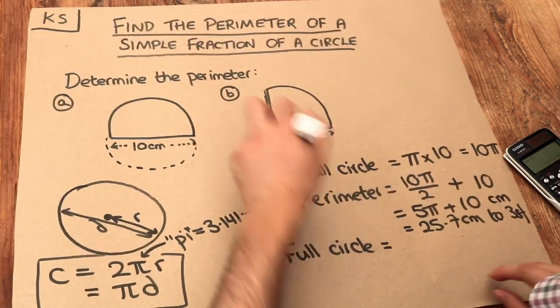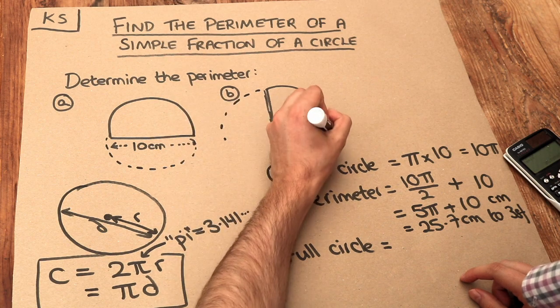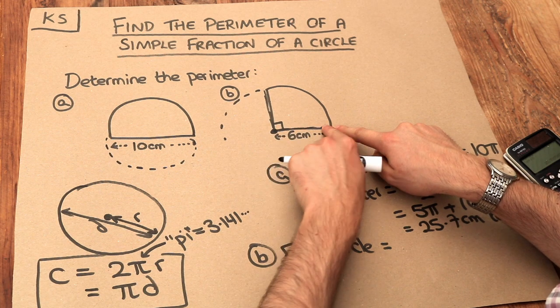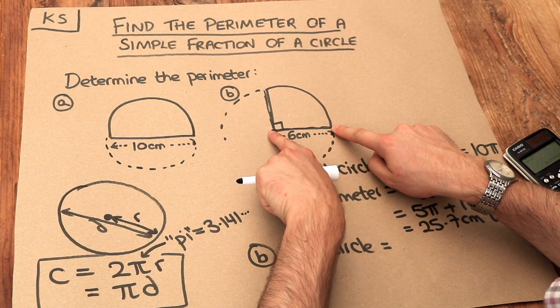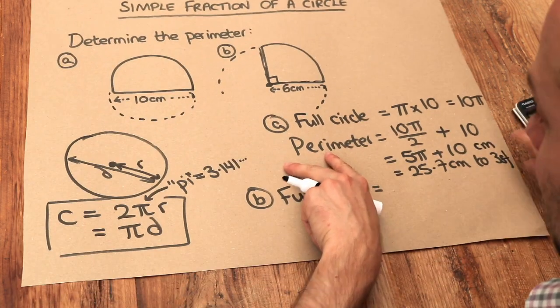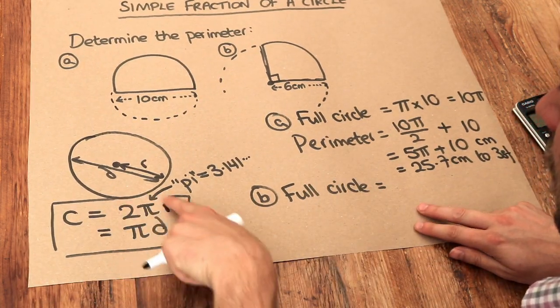Well, this time, if I was to continue the circle on, can you see that we've only got the distance from the centre of the circle to the circumference here? So the radius this time is 6 rather than the diameter being 6. So if our radius is 6, let's use this first formula.